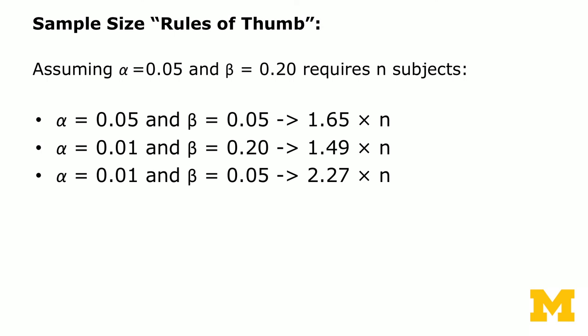Looking at rules of thumb: if beta is reduced to 0.05, the sample size becomes 1.65 times n. If type 1 error is reduced to 1% with power at 80%, you need 1.5 times the sample size. If alpha = 1% and beta = 5%, you need essentially 227% of the original sample size.